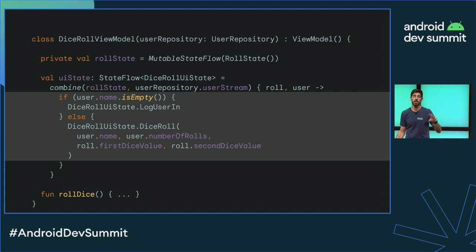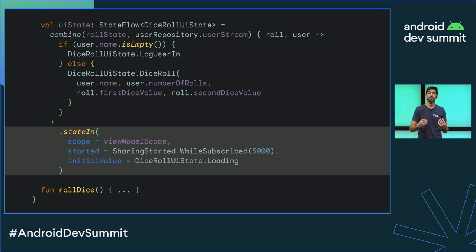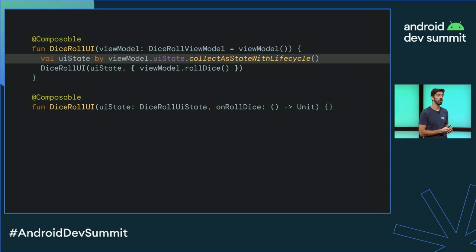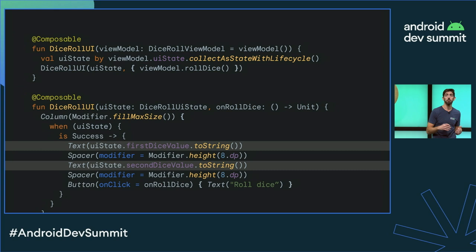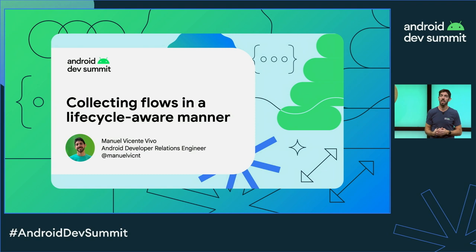combine returns a Flow, and to convert it to a StateFlow we use the stateIn operator again. These UI states need to be collected in a lifecycle-aware manner in the UI. In Compose, we use the collectAsStateWithLifecycle API, which transforms the collected values into Compose state. We can then pass them to stateless composable functions that render the information on the screen. Check out the 'Collecting flows in a lifecycle-aware manner' talk available on YouTube later today for more on this.